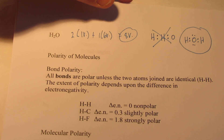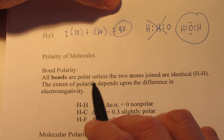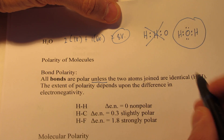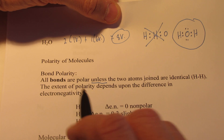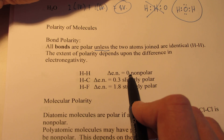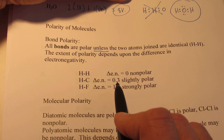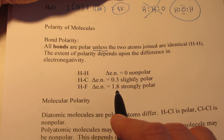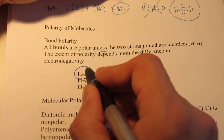Now let's talk about polarity. All bonds are considered polar bonds, unless the two atoms joined are identical. Hydrogen to hydrogen would be a non-polar bond, but hydrogen bonded to any other atom would be a polar bond. The extent of polarity depends on the difference in electronegativities. Hydrogen to hydrogen has no electronegativity difference. Hydrogen to carbon has a difference of about 0.3 units, making it slightly polar. Hydrogen to fluorine has a difference of 1.8, making it a strongly polar bond.